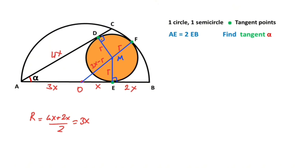We know that according to the two tangent theorem, if this length is 4x, this length must also equal 4x. Now if we focus on triangle OME, we can apply the Pythagorean theorem to find the relationship between x and r. So: x squared plus r squared equals (3x minus r) squared.